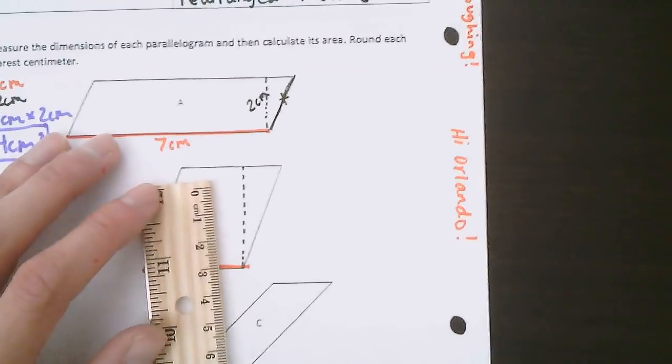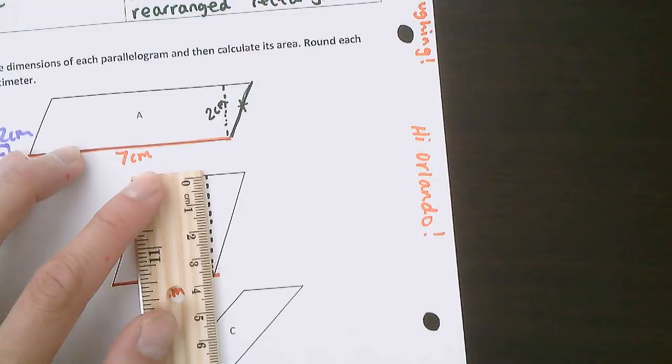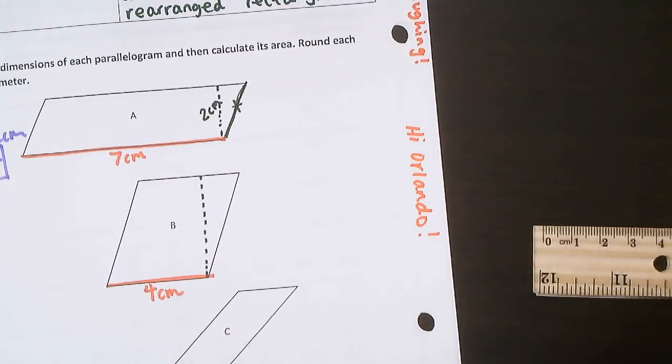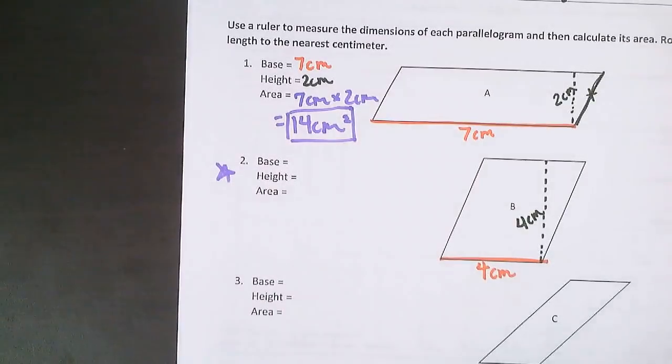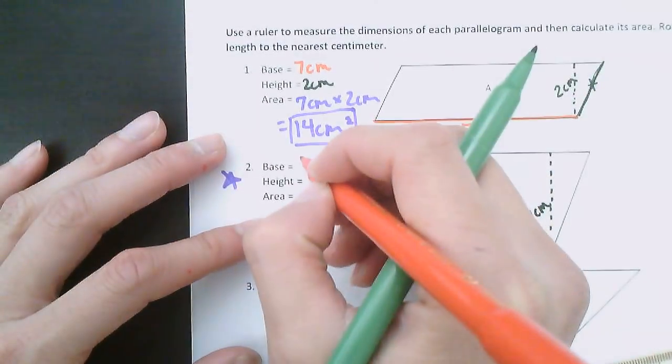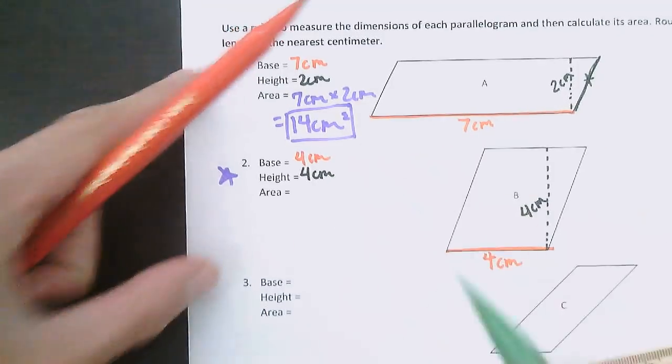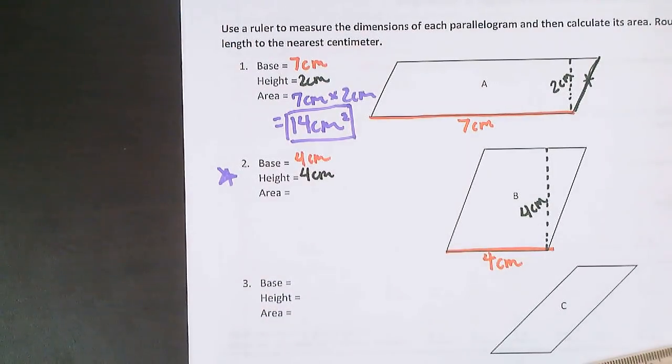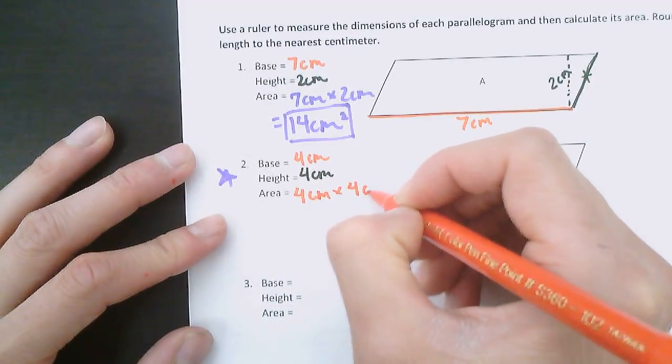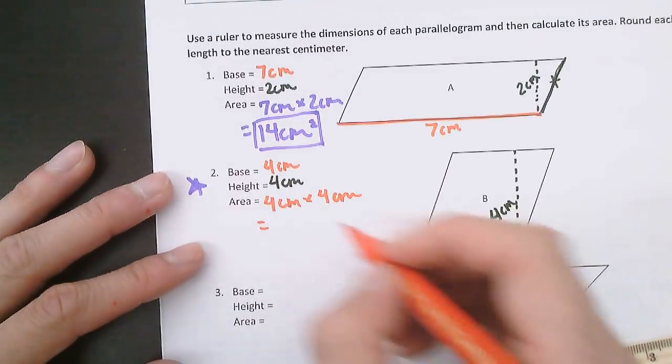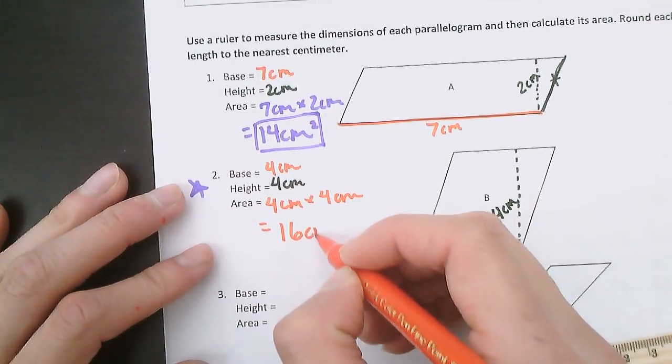The height, which is the distance from the top to the bottom, is also a little bit more than three and a half. So I'm going to say that the height is also four centimeters. Let's fill that out. Base is four centimeters, height is four centimeters. The area, multiply the base times the height. Four times four is 16. Centimeters times centimeters is centimeters squared.